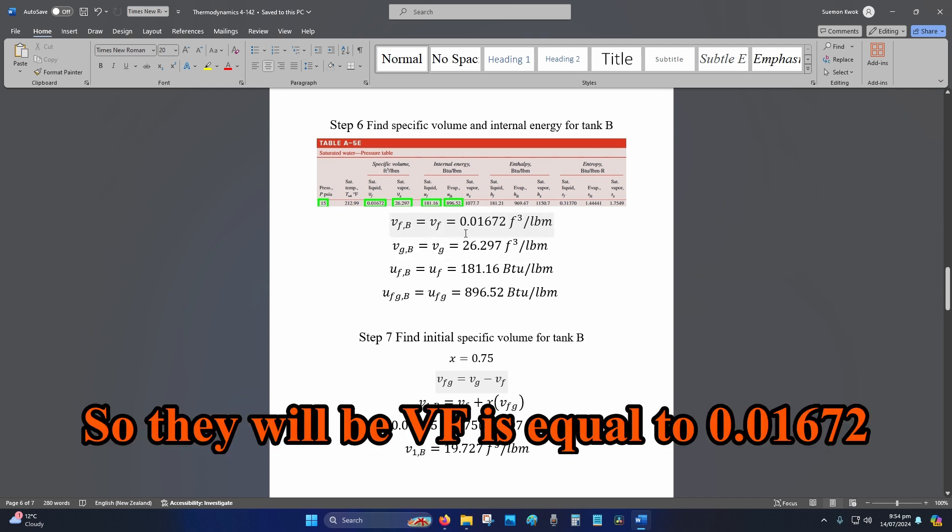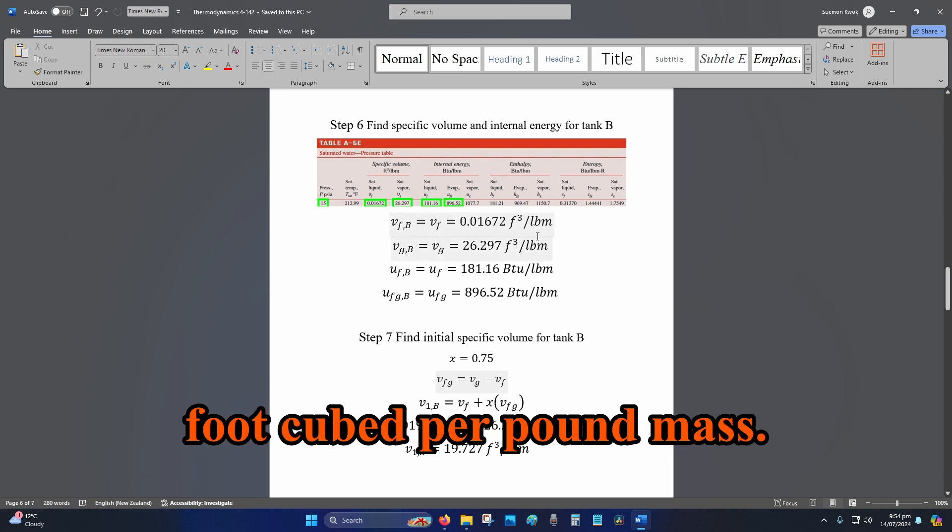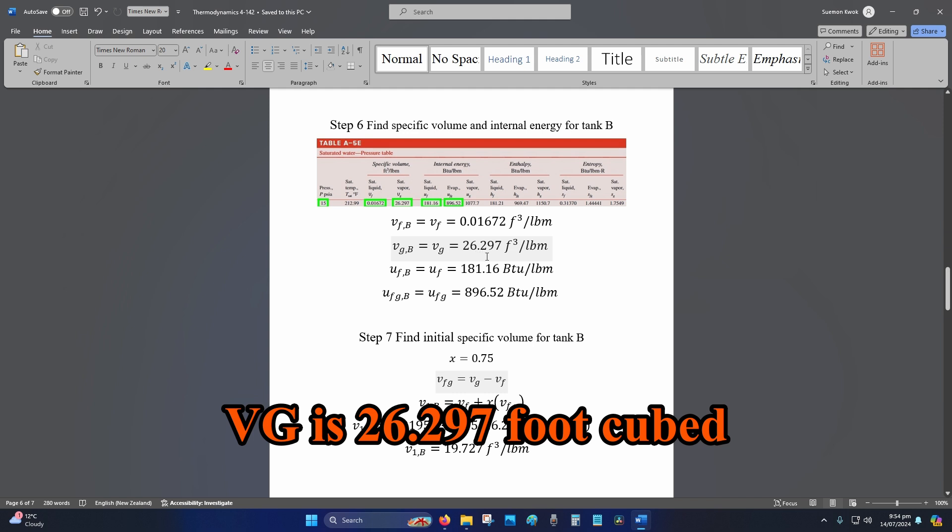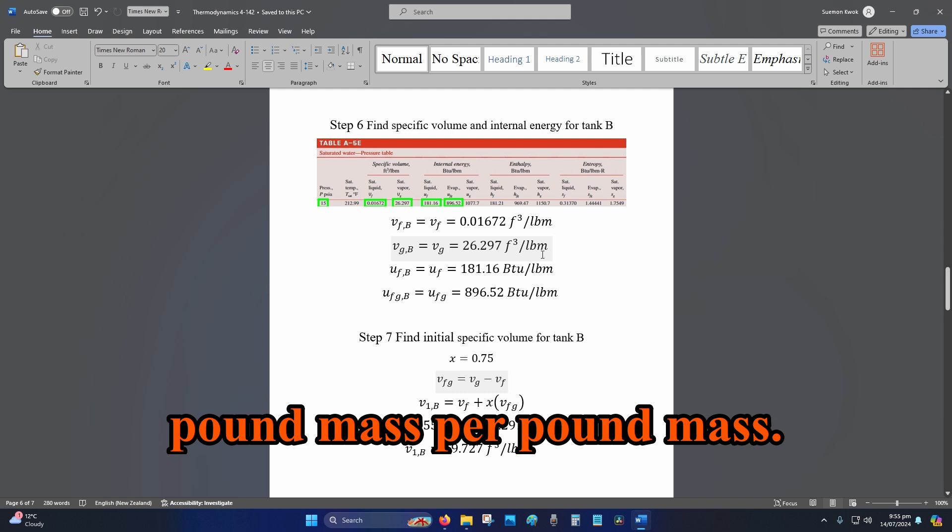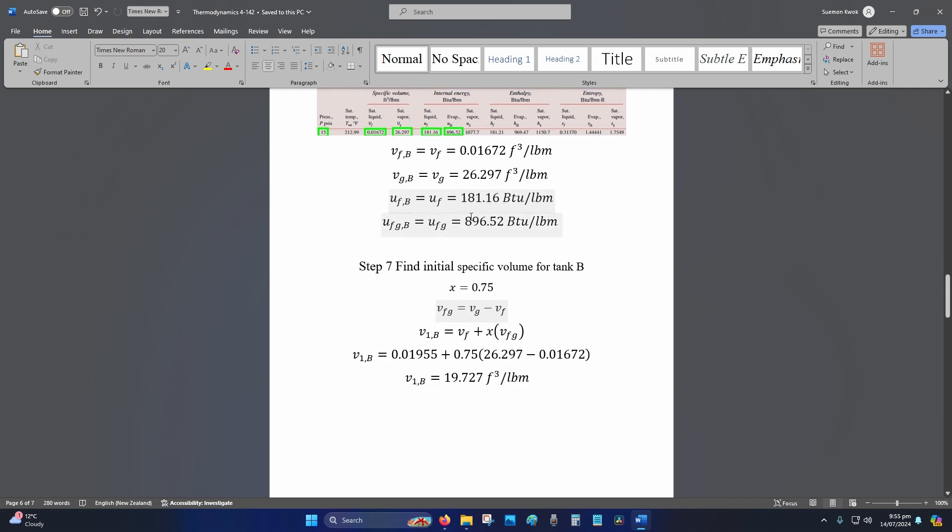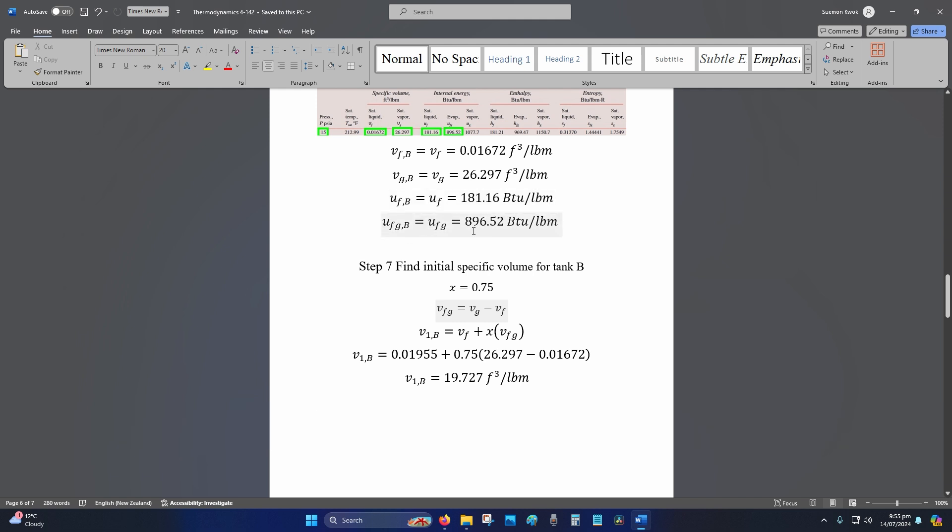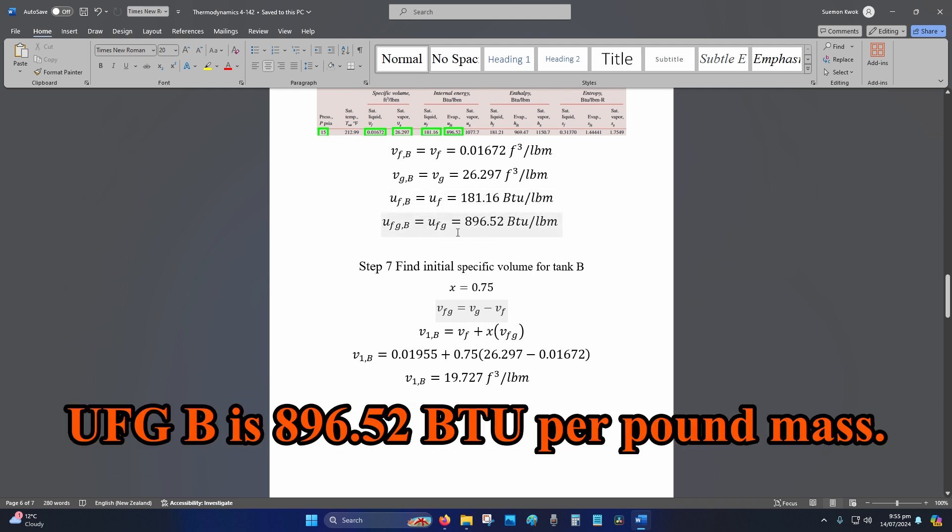So, they will be VF is equal to 0.01672 foot cubed per pound mass. VG is 26.297 foot cubed per pound mass. UF is 181.16 BTU per pound mass. UFG B is 896.52 BTU per pound mass.